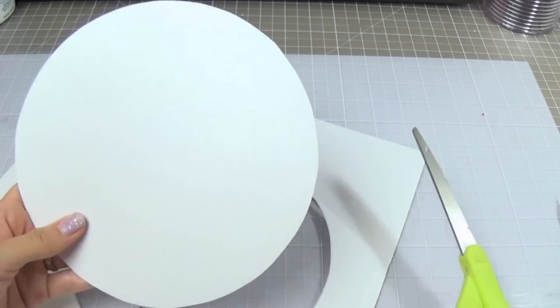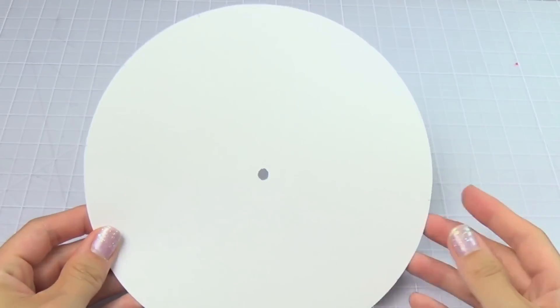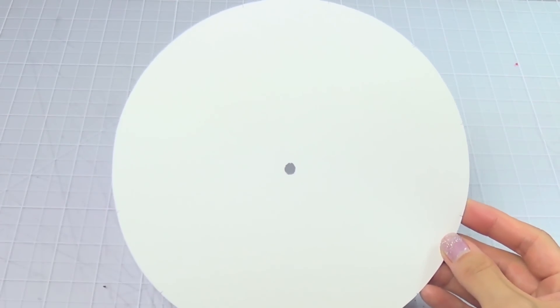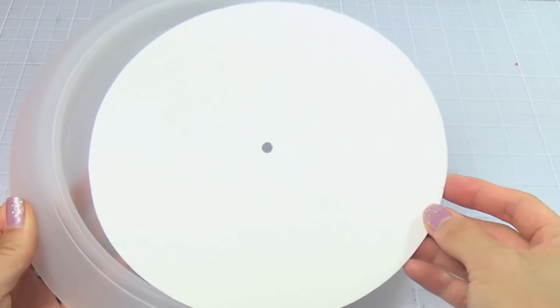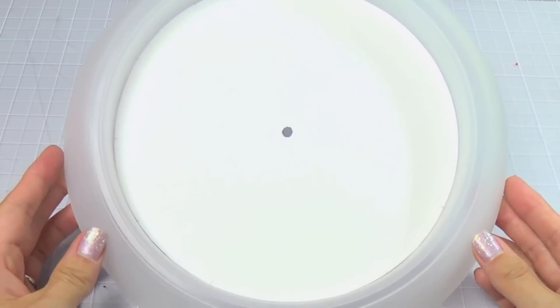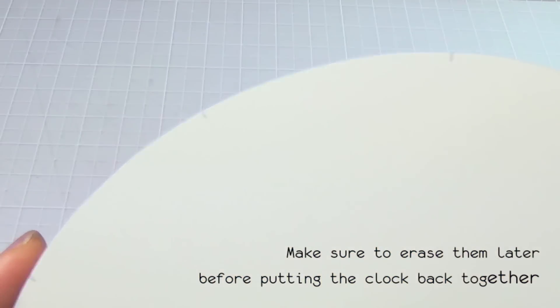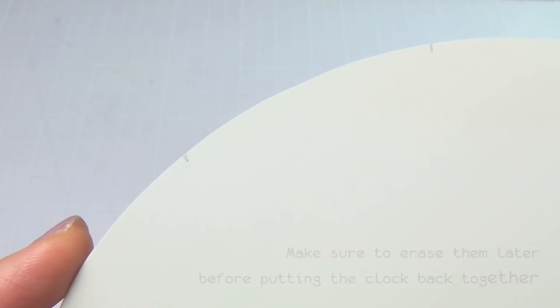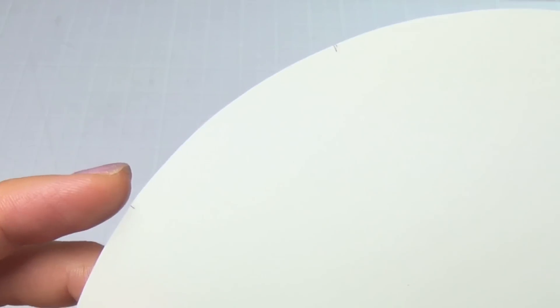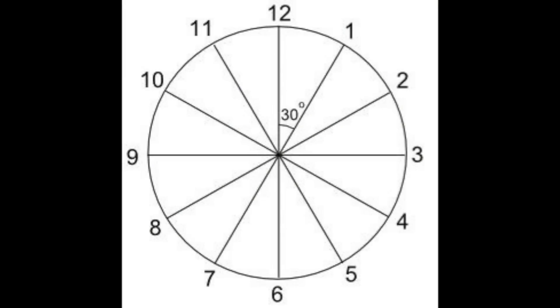Then cut out a small hole in the center for the clock assembly. Here I've marked off where the numerals will be with a pencil. Here is a photo I used as a guide to measure it correctly. The angles between the numbers should be 30 degrees.